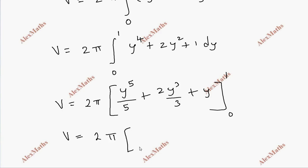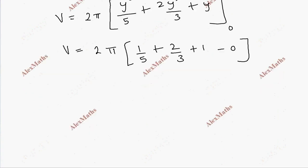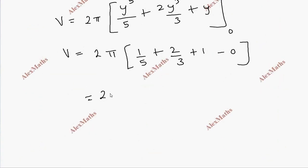Volume equal to 2 pi. Now, 1 substitute the power of y. This is 1 by 5 plus 2 by 3 plus 1, which is low limit.